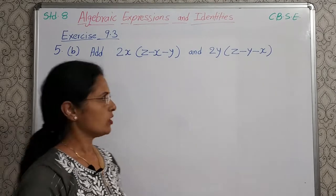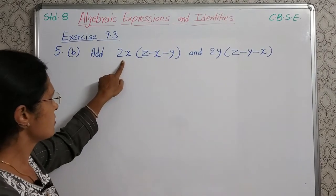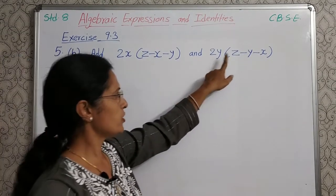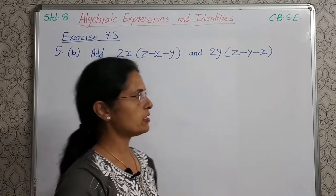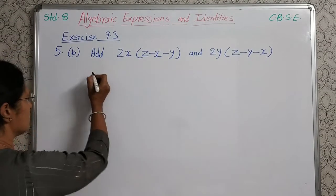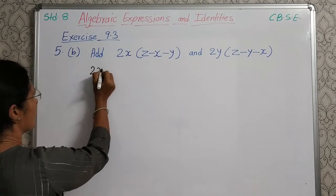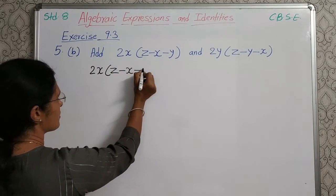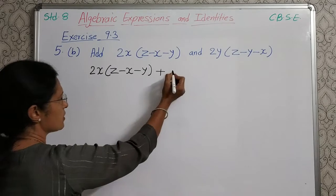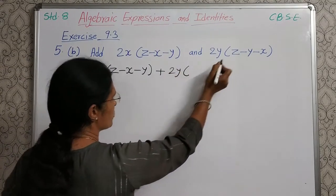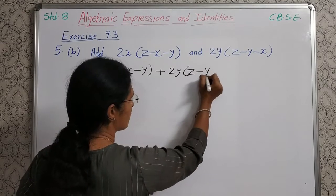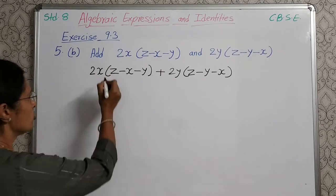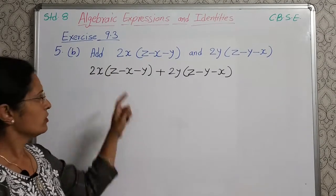Next, let us solve this addition: 2X into bracket Z minus X minus Y, and 2Y into bracket Z minus Y minus X. Let us write the sum: 2X multiplied by bracket Z minus X minus Y, plus 2Y into bracket Z minus Y minus X. Now, first multiply this 2X with each and every term from this bracket.